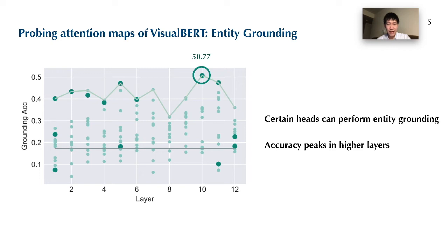Further, the accuracy peaks in higher layers, suggesting that the model deepens its understanding of the image as information is propagated through multiple transformer layers.